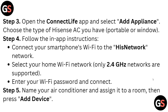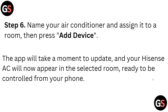Enter your Wi-Fi password and connect. In step five, name your air conditioner and assign it to a room, then press 'Add Device.' The app will take a moment to update.